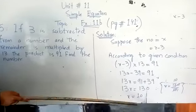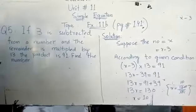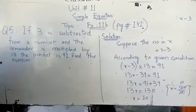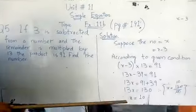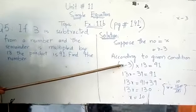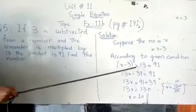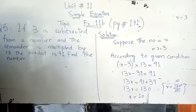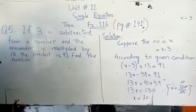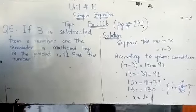If we have to verify, we have to see that if we put this x value in the question, we must get 91, means left hand side equals right hand side. Thank you.